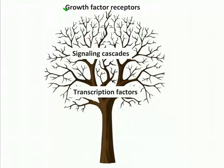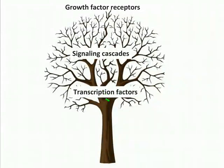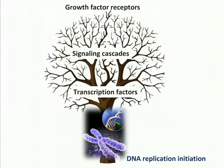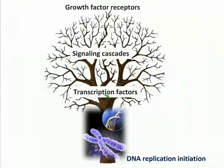Some time ago, we proposed an alternative approach, which we always illustrate with the tree principle: growth factor receptors are at the twigs and periphery of the tree, and the peripheral branches illustrate the complex, branched, and partially redundant nature of oncogenic signaling cascades. As we move closer to the trunk of the tree, we arrive at the transcription factors. The hypothesis we formulated is that all of these oncogenic signaling pathways converge at the cell cycle engine, and more specifically at the machinery required to initiate DNA replication. We postulated that diagnostic and therapeutic targeting at this convergence point might be beneficial for cancer diagnostics and therapy.